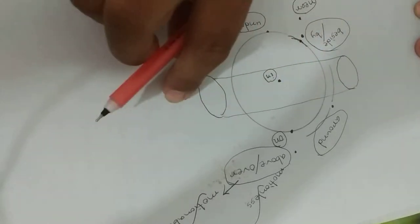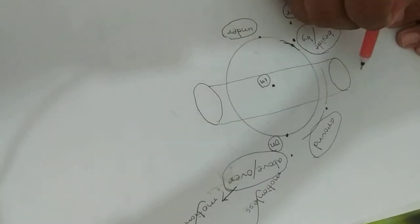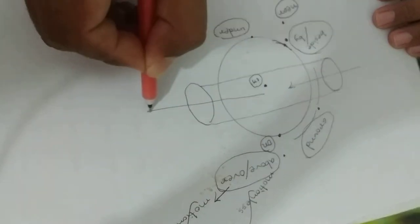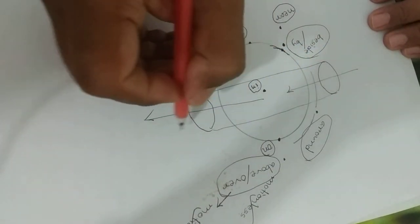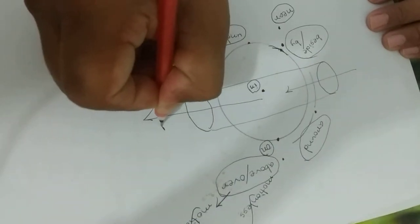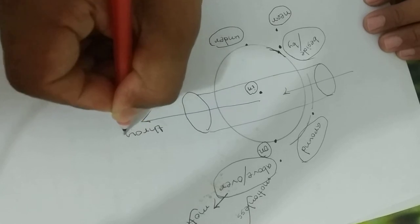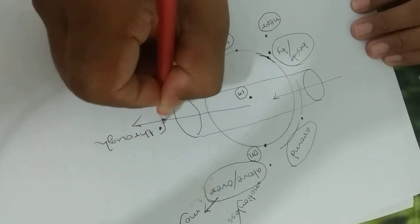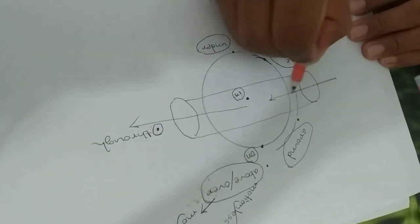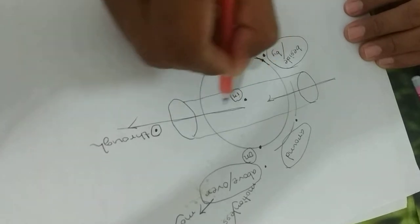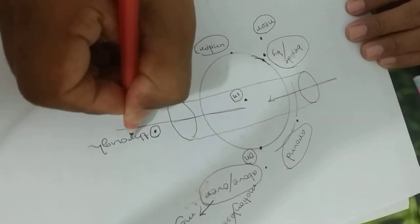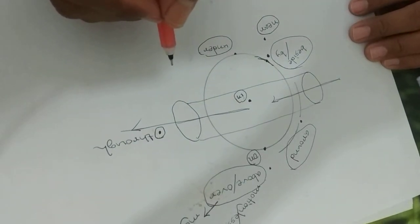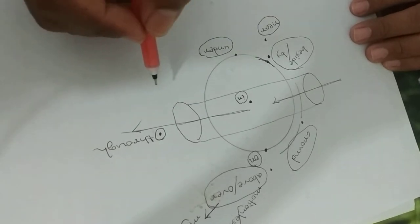এটা অনেকটা tunnel-এর মতো। এখান থেকে কোনো কিছু ঢুকলো, tunnel-এর ভেতর দিয়ে বের হয়ে গেল। কোনো কিছুর ভেতর দিয়ে যাওয়া বোঝাতে — through. T-H-R-O-U-G-H. উদাহরণ: A rat went through a tunnel — একটি ইঁদুর সুরঙ্গের ভেতর দিয়ে গেল।